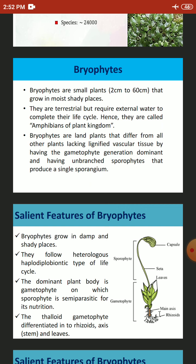The dominant plant body is the gametophyte, on which the sporophyte is semi-parasitic for its nutrition. In higher bryophytes — the Musci members — the plant body is erect and consists of a central axis which bears leaf-like expansions. It is attached to the substratum by branched multicellular rhizoids.